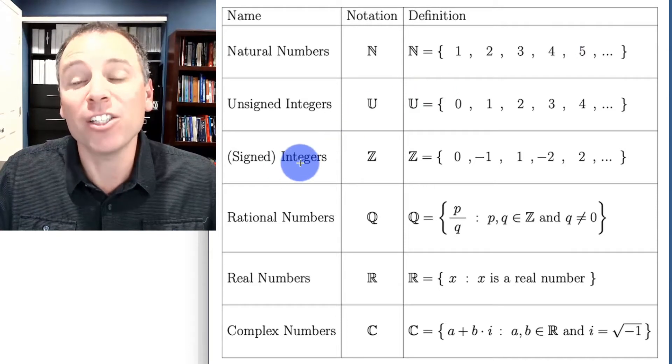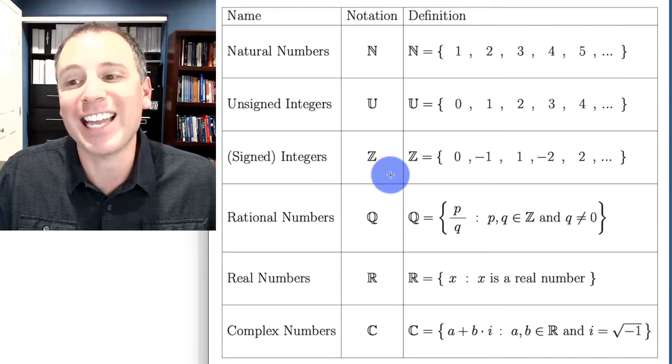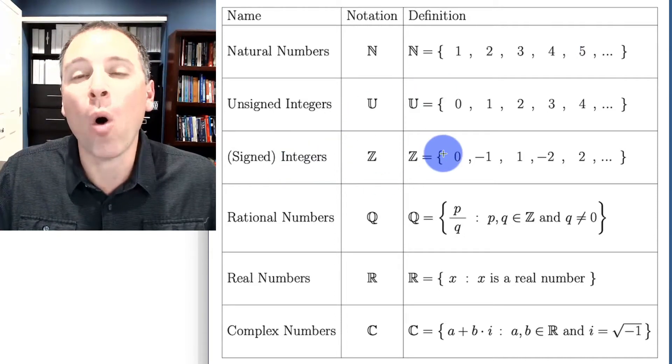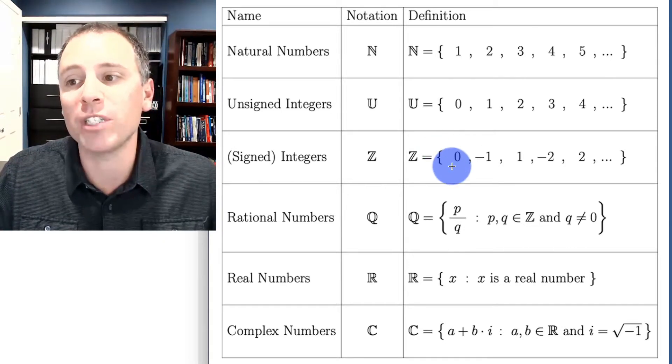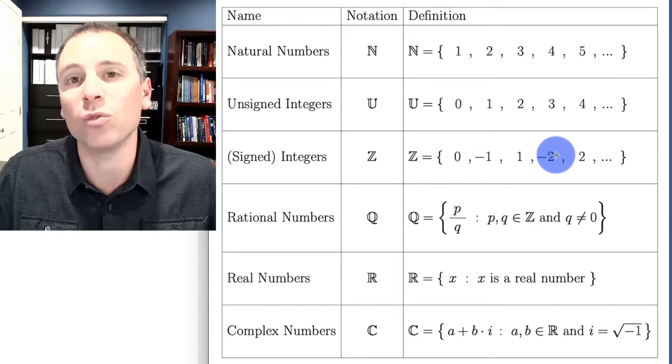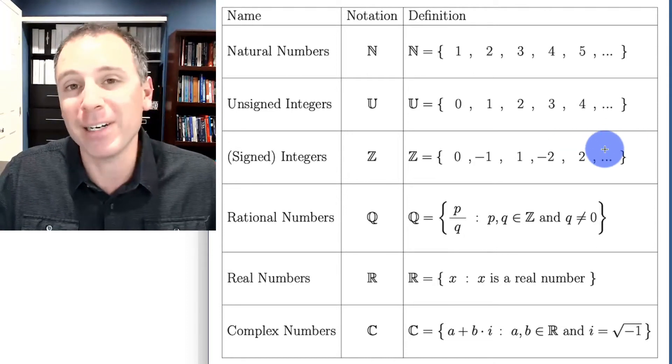Then normally we think about integers in general, which is the set Z. Those are all positive and negative counting numbers. So 0, negative 1, 1, negative 2, 2, negative 3, 3, etc.